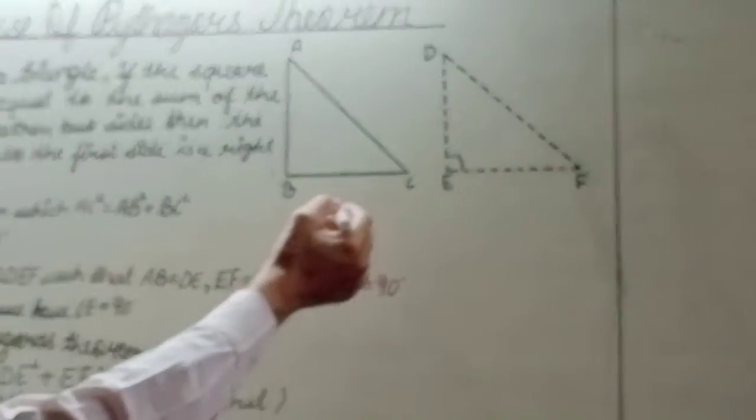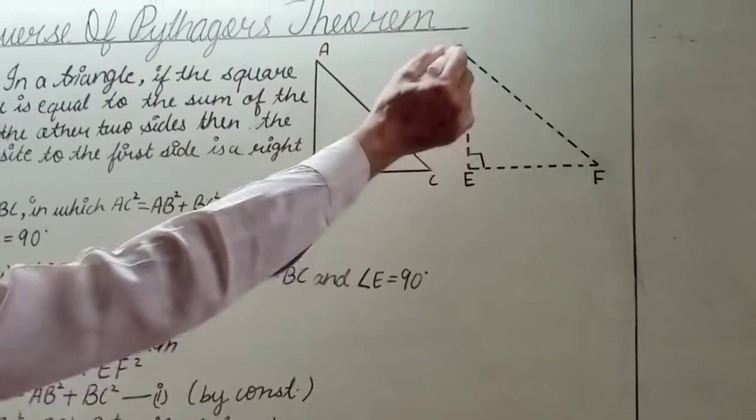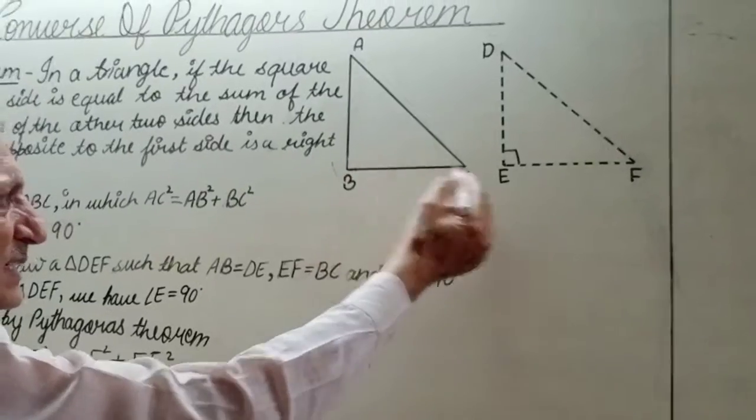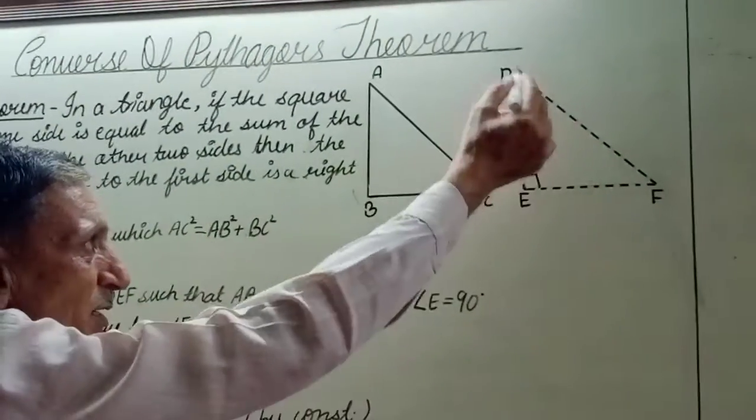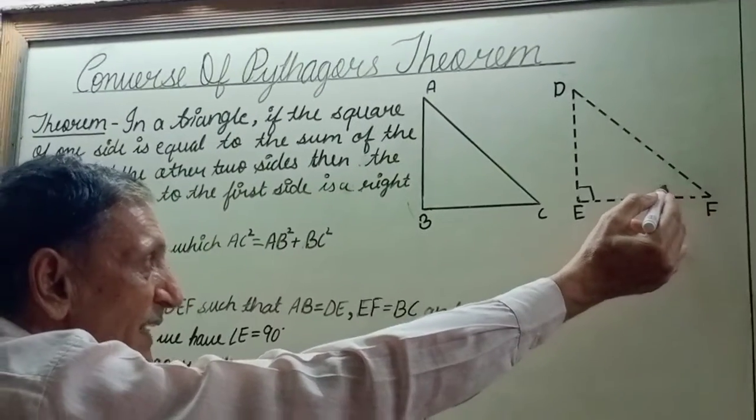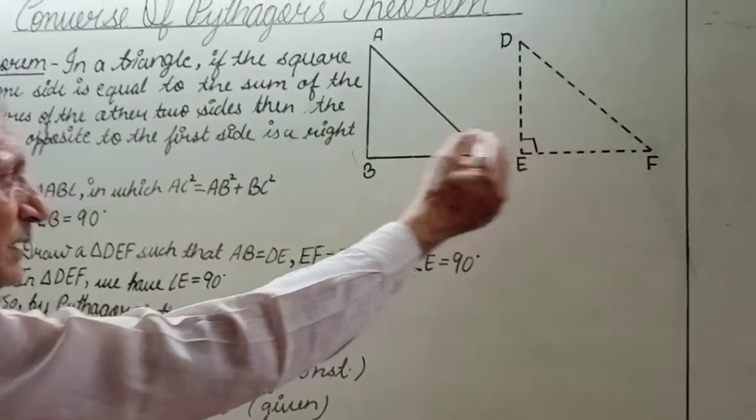Now, in triangle ABC and triangle DEF, we have AB = DE by construction, BC = EF by construction, and AC = DF proved just now, proved above.